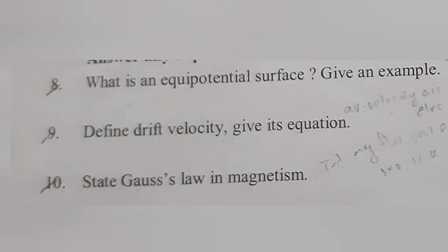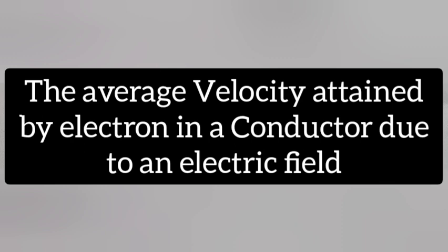Question 9: Define drift velocity. Give its equation. Answer: Average velocity attained by electron in a conductor due to an electric field. Equation: Vd equals minus Ee by mc.